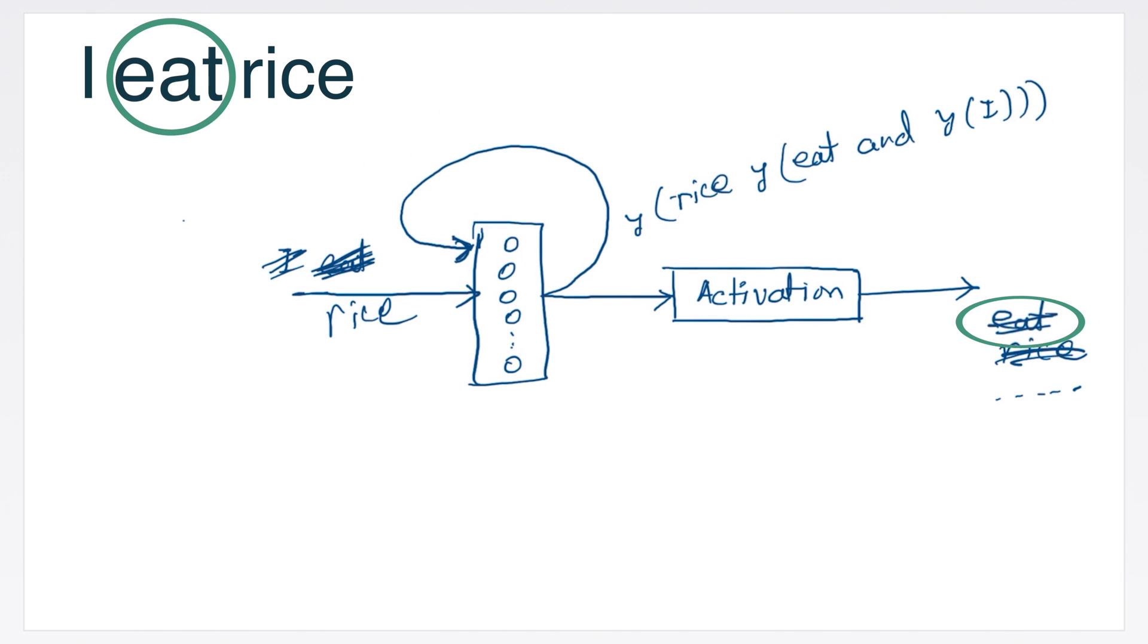The new hidden state coming out of the hidden layer will contain information about I eat rice. Now, the expected output eat for the input word I and the output rice for the input word eat will help determine the error of the RNN, which can be used for backpropagation. Let us discuss the math, which will clarify it further.